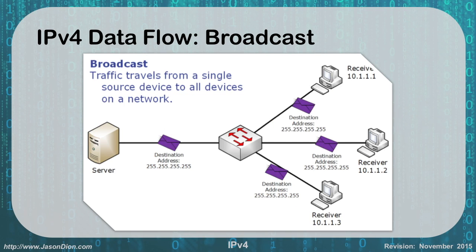The third type is broadcast, which goes from a single source to all destinations on the network. The most typical use is a broadcast message to identify devices on the network, sending something to 255.255.255.255, which goes to every device. Every network has a network IP, its associated hosts, and a broadcast IP — we'll talk more about that when we get into subnetting. And that is the basics of IPv4.